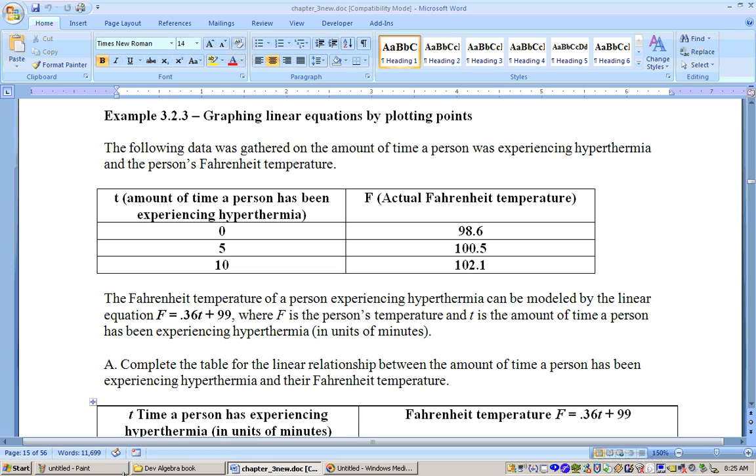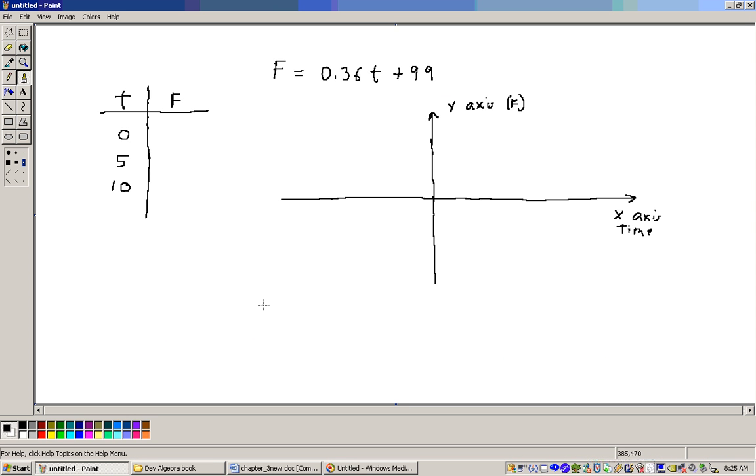Let's go and graph this thing. So, here's my equation, F equals 0.36t plus 99, and here's the values I'm going to substitute in. When I substitute 0 in for t, well, 0 times anything is 0, and 0 plus 99 is 99.